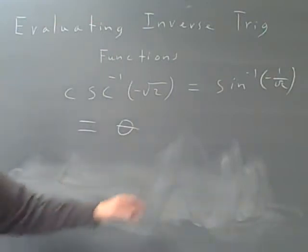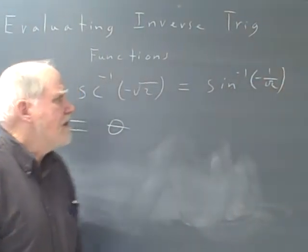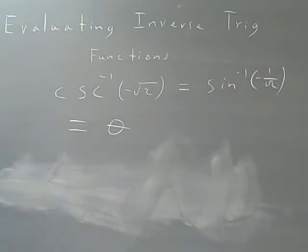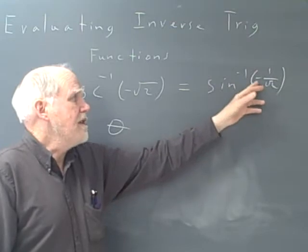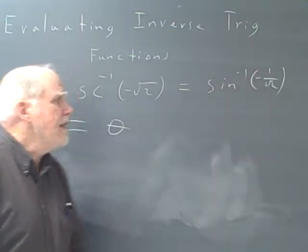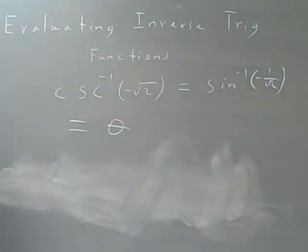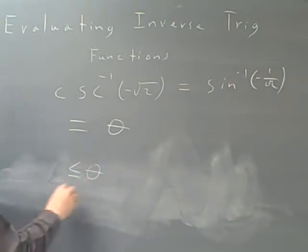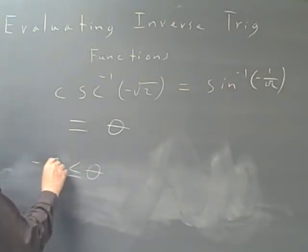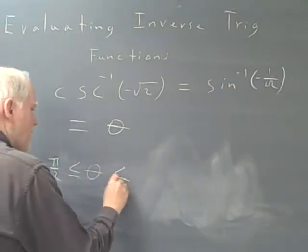Well, what do we know about theta? With the sine inverse, one thing we know that if this were positive, it would be an angle in the first quadrant, but it's not, it's negative, and the sine is, so it's a negative angle in the fourth quadrant. So we know that theta is greater than or equal to negative pi over 2 and less than or equal to 0.